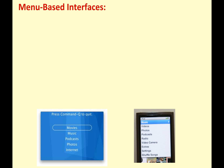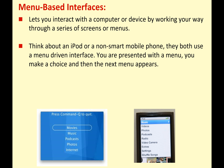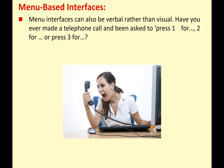The next type of user interface we need to know about is the menu-based interface, and there are a couple of examples here on screen. This lets you interact with the computer or a device by working your way through a series of menus, a series of screens. Think about an iPod or a non-smart, old-fashioned mobile phone — they both use this menu-driven interface. You're presented with a menu, you make your choice, and the next menu appears. Also ATMs and public information systems are all good examples of a menu-driven interface. Menu-based interfaces can also be verbal rather than visual — have you ever made a telephone call and been asked to press 1 for this, 2 for this, or 3 for something else? That is still a menu-based interface, even though it's spoken rather than on a computer screen.